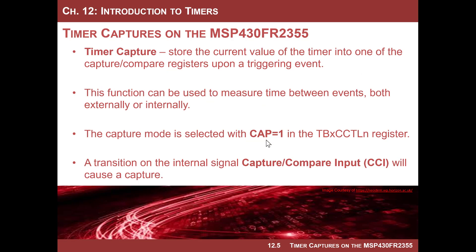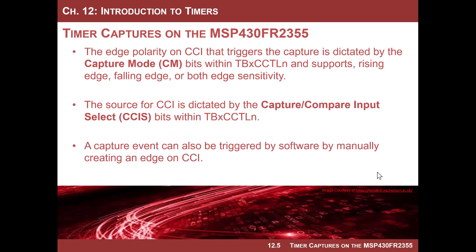Remember, you use the capture compare register, so you share it amongst the compares, but you can only do one or the other. There's a bit within the CCTL register — the capture compare control register — called CAP. That's how you tell it to go into capture mode. You also have a bunch of settings, but one of the more important ones is figuring out which input is going to trigger the capture. The CCI bit does that. And you have a mode which allows you to say you're sensitive to rising edges, falling edges, or both.